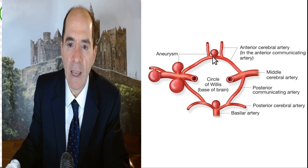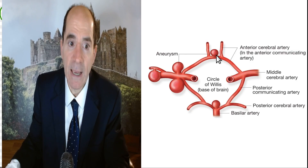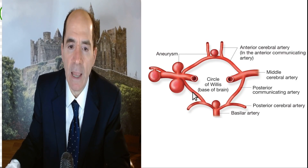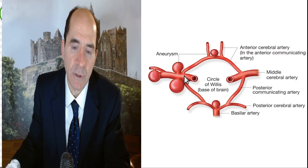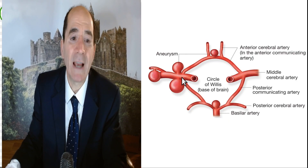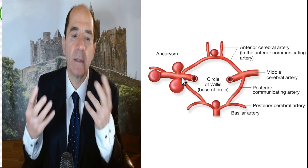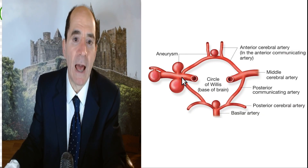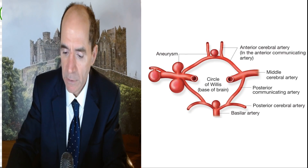This is the anterior communicating artery, so this would be an anterior communicating artery aneurysm — an ACOM aneurysm. If I had an aneurysm in the middle cerebral artery, we'd call it an MCA aneurysm, M1 segment, the first segment. We're not going to go into all that, but the terminology is valuable so you can precisely describe disease.